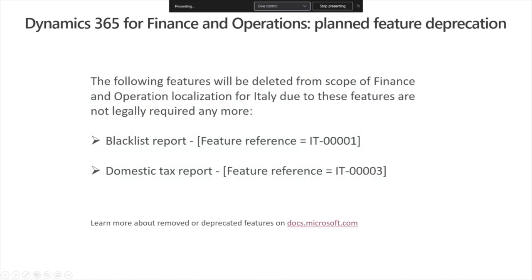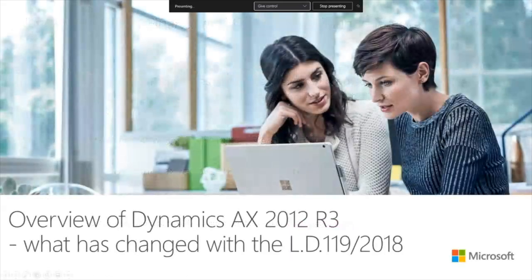Here is a small announcement regarding Finance and Operations, which is also officially published: due to the fact that the blacklist report and old version of the domestic tax report are not required anymore — I do not mean the Esterometro report, which obviously stays in place — these features are planned to be deprecated in one year. If you want to learn more, you may follow this link and find more information about this.